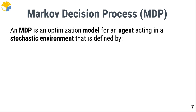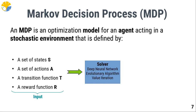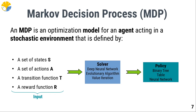An MDP is an optimization model for an agent acting in a stochastic environment, defined by a set of states S, a set of actions A, a transition function T which defines the dynamics of the environment, and a reward function R which defines the positive and negative states in the environment. The MDP, or multiple MDPs, that define a problem — like playing Super Mario Bros — would be the input to a solver, which can be a deep neural network, an evolutionary algorithm, or the value iteration algorithm. The output of this solver would be a policy that dictates the behavior of an agent, represented either as a binary tree, a table, or a neural network.